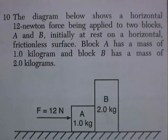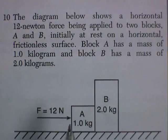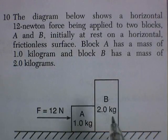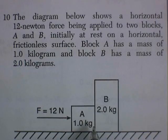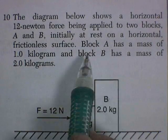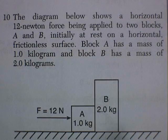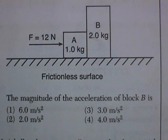Question 10. The diagram below is a horizontal 12-Newton force being applied to two blocks, A and B, initially at rest on a horizontal frictionless surface. Block A has a mass of 1 kilogram, B has a mass of 2 kilograms. Frictionless surface.